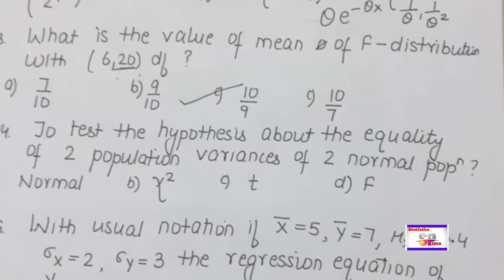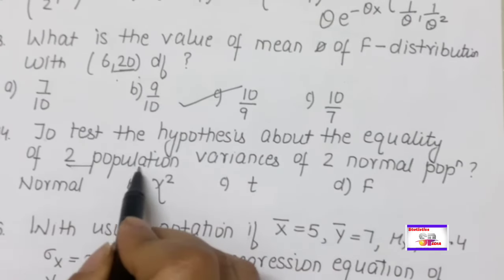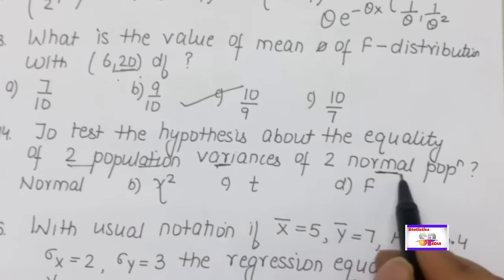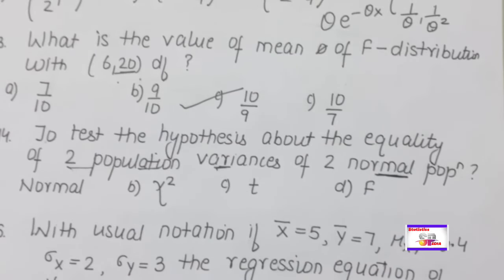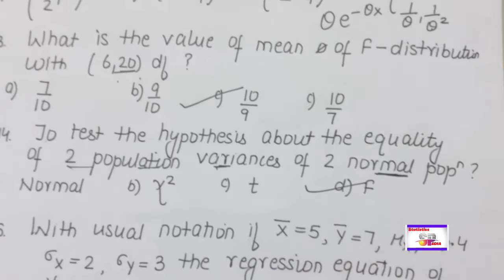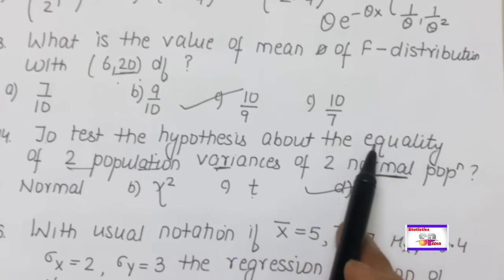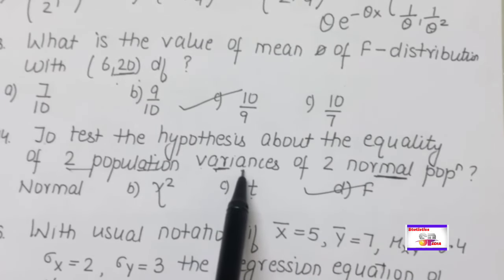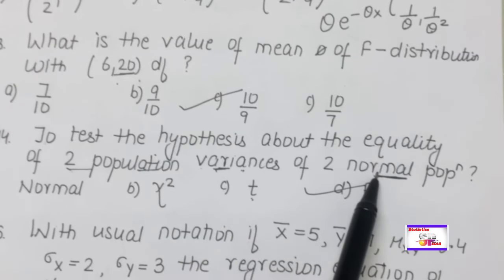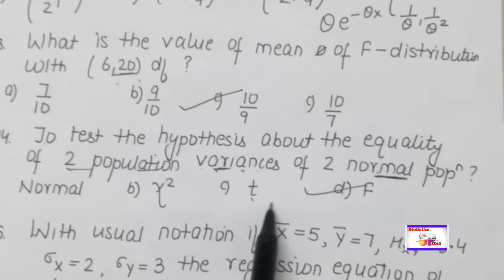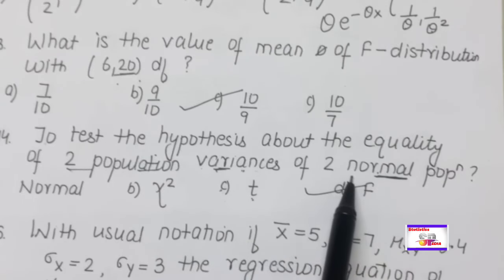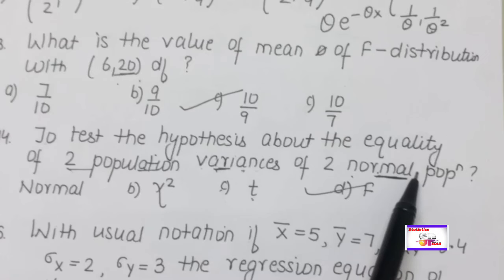To test the hypothesis about the equality of two population variances of a normal population, we use the F-distribution. The T-distribution is used for testing equality of two population means (when population is normal). Both T and F tests are parametric tests because the form of the population (normal distribution) is known.